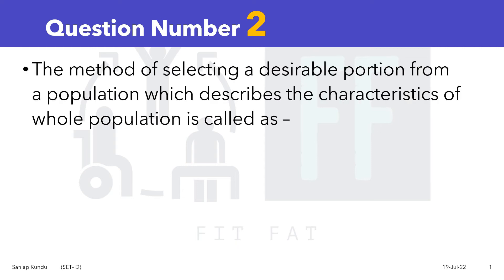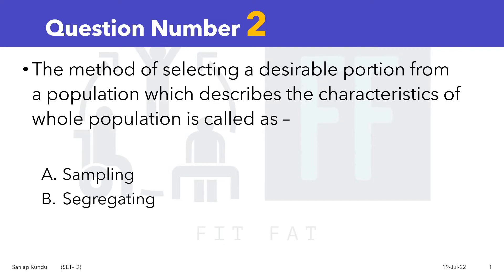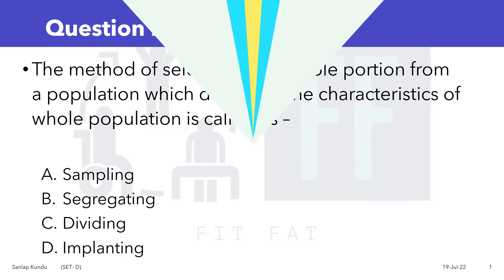Question 2. The method of selecting a desirable portion from a population which describes the characteristics of the whole population is called as: sampling, segregating, dividing, or implanting?